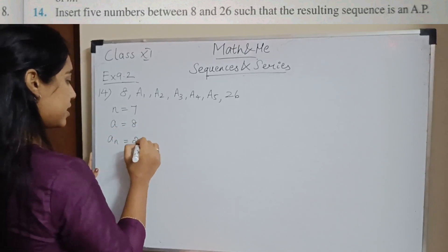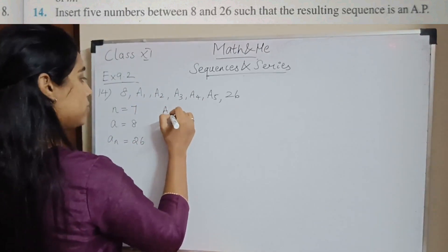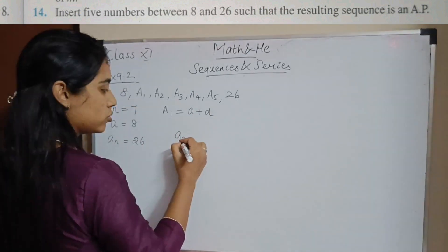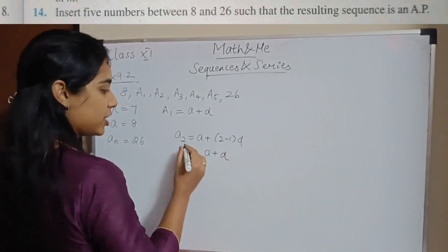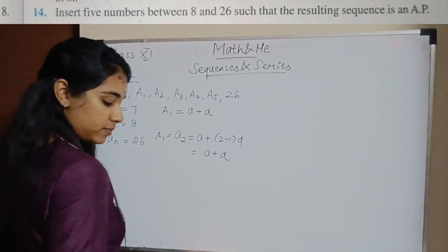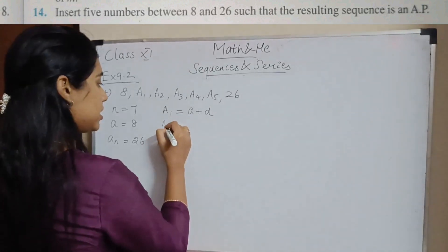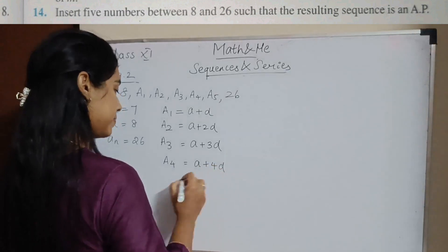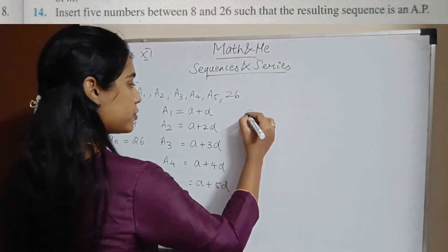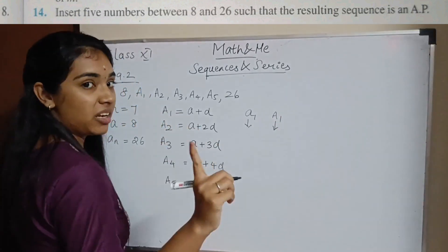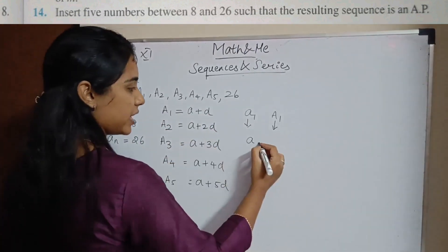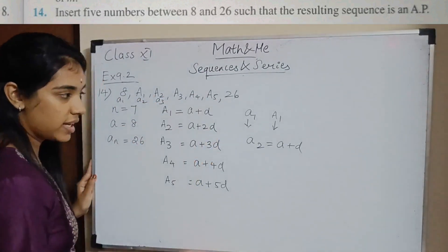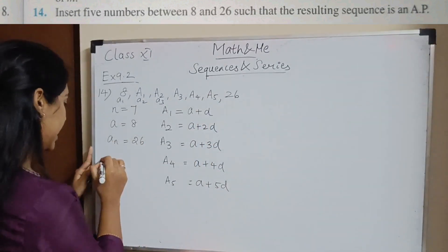You need to find the other terms. A1 is a + d, A2 is a + 2d, A3 is a + 3d, A4 is a + 4d, and A5 is a + 5d. Don't get confused between the first term a and A1 the first arithmetic mean. A1 here refers to a + d, which is the first inserted arithmetic mean.